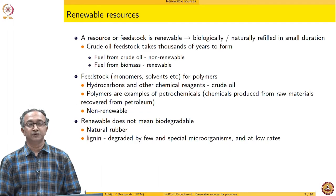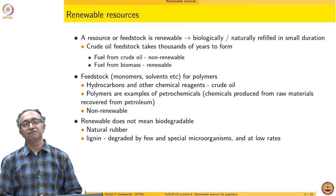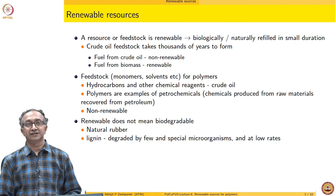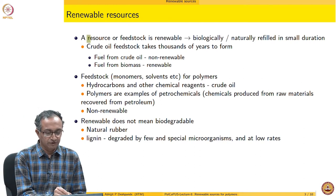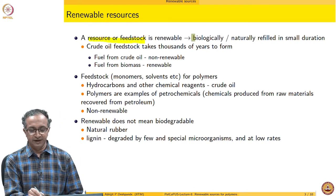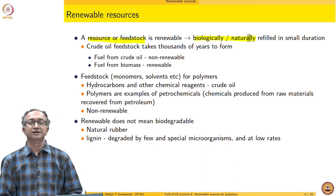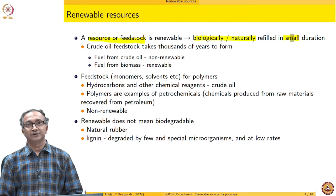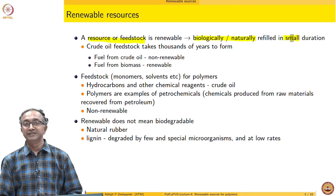What do we mean by renewable resources? Generally, whenever we think of a material, we need to think about what the raw material or feedstock is. A resource or feedstock is renewable if it can be biologically or naturally refilled, but the question is also related to how much time that takes. For example, we know that petroleum also comes from biomass — it is derived from naturally occurring systems: trees, plants, and biomass.